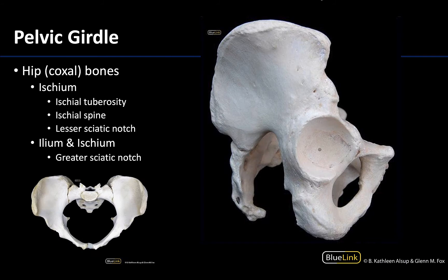Now let's focus on this lateral view. I know I'm looking at a lateral view because of the very obvious acetabulum right here. This is where the head of the femur will articulate with the coxal bone to form the hip joint, so any time you can see a really nice view of the acetabulum you're looking at a lateral view. It also affords a nicer view of the ischium, which extends a little bit into the ischiopubic ramus and is not as visible in an anterior view.